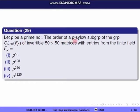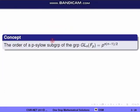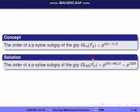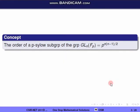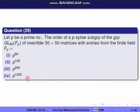To find the order of the p-Sylow subgroup, we use the concept: the order of a p-Sylow subgroup of GL(n, Fp) is p^(n(n-1)/2). Here they have asked for GL(50, Fp), so substituting n=50 we get p^(50×49/2) = p^1225. The correct option is the fourth one.